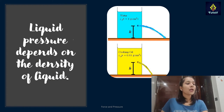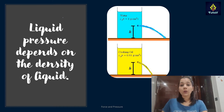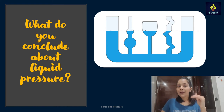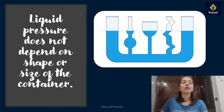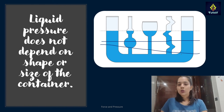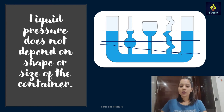To summarize, liquid pressure depends on the density of the liquid. There was one more factor — area and shape. Looking at different shaped containers with the same water level, placing a manometer at the same depth would give the same reading in all of them. This is because liquid pressure does not depend on the shape or size of the container. At a particular depth, the manometer reading is the same, and as depth increases, liquid pressure keeps on increasing.